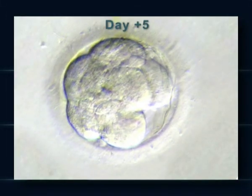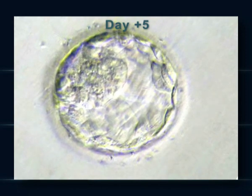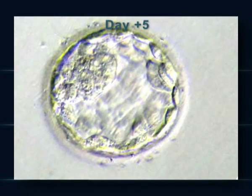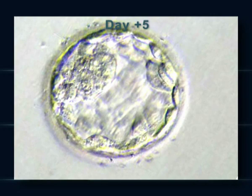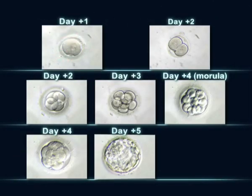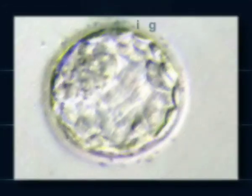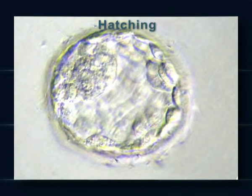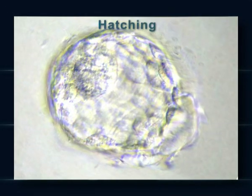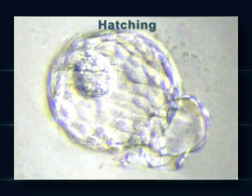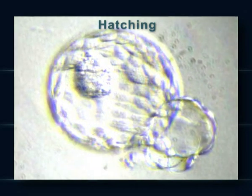On day five, the embryo contains more than 100 cells. In the center, there is a fluid-filled cavity. Finally, the blastocyst will shed the membrane that surrounds it. This is called hatching.